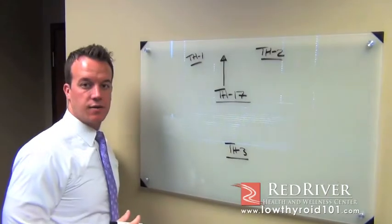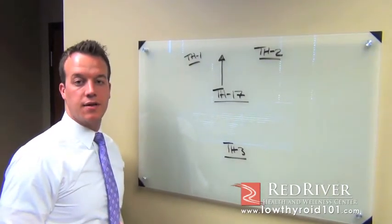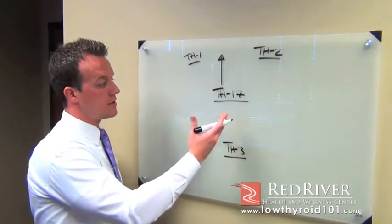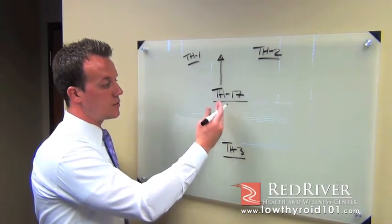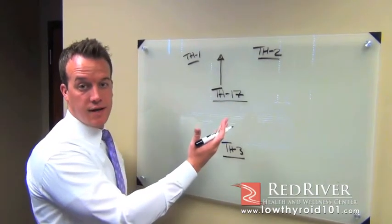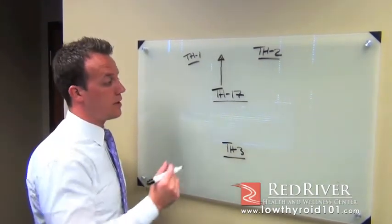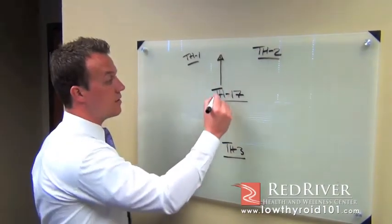When this TH17 cell increases, these patients are going to have a lot more symptoms and their quality of life is going to be worse. Sometimes patients with low thyroid and Hashimoto's, this has really calmed down, in a dormant state. When this flares up, patients are going to have a lot more symptoms throughout the body.